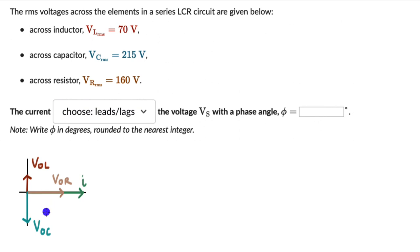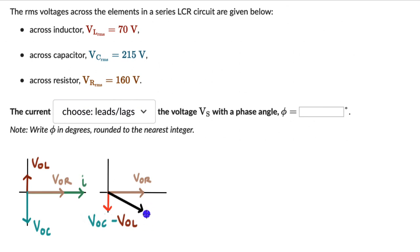Now let's find the resultant supply voltage. V0L and V0C are in opposite directions, so their resultant is V0C minus V0L, pointing downward. We already have V0R pointing to the right. We now have a right-angle triangle, and the resultant supply voltage is the hypotenuse. Bringing in the current vector — which points along x — we can see that the supply voltage and the current are not in phase. Just from the diagram, we can see that the current is leading the supply voltage by the phase angle φ.